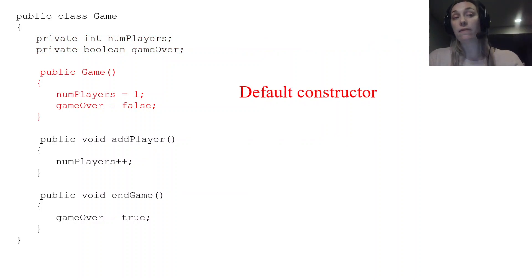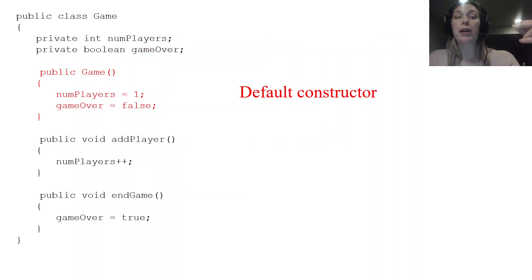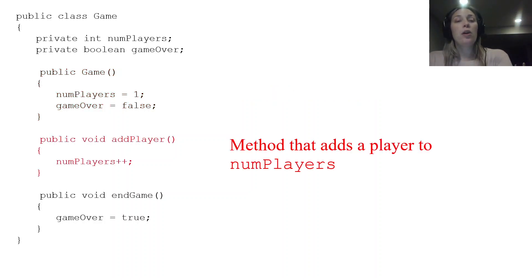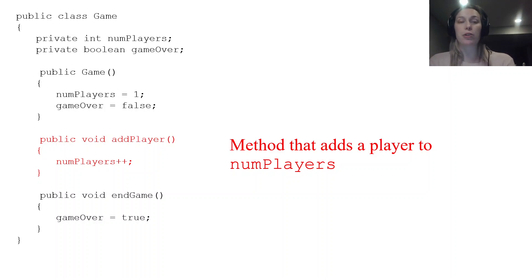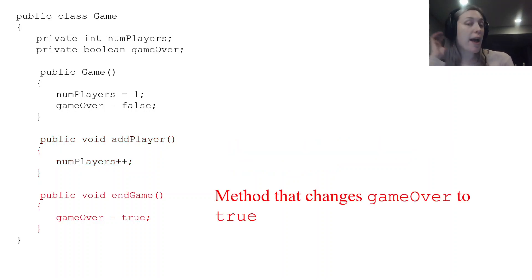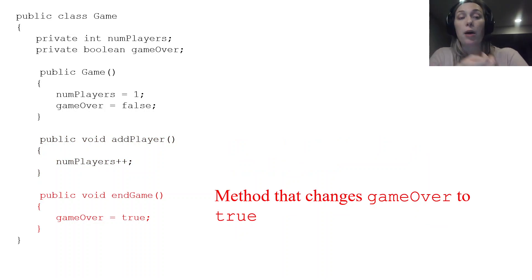Next we have our default constructor, public Game, where numPlayers and gameOver get set to two default values. We have a method that adds a player: public void addPlayer with no parameters — numPlayers increases by one. Then we have public void endGame, also no parameters, which changes gameOver to true.